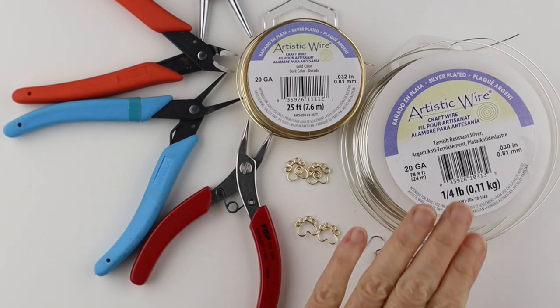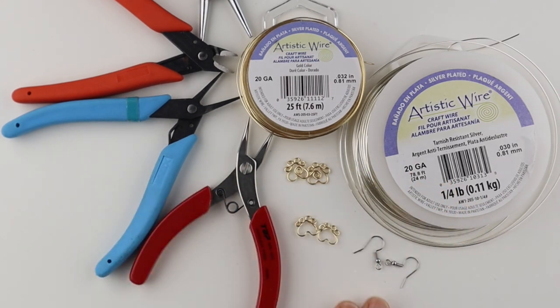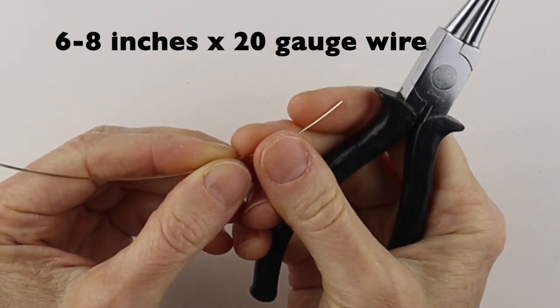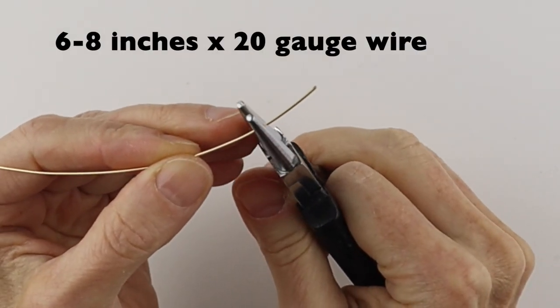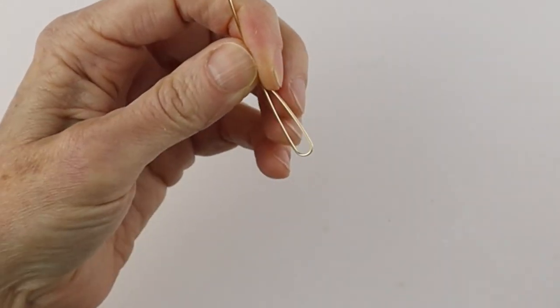What you're gonna need for this project is 20 gauge wire, your tools, and you can have some earring hooks handy if you want. I'll take about a 6 to 8 inch piece of wire and we'll start at the bottom, so we're just gonna do a little bit of a loop at the bottom.